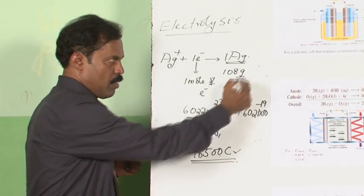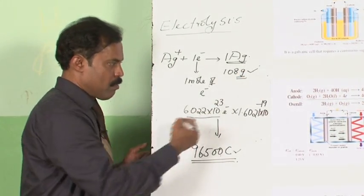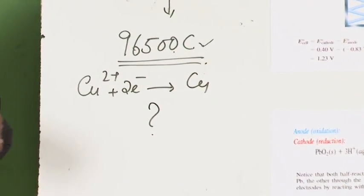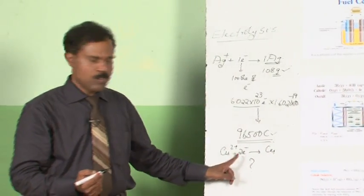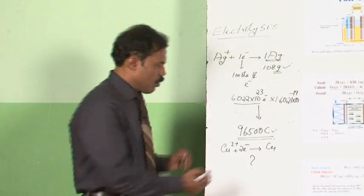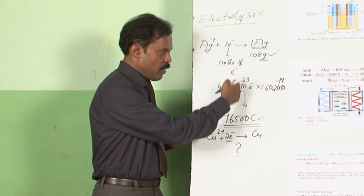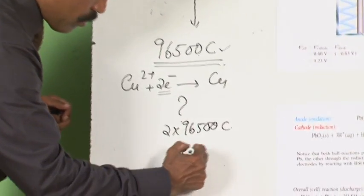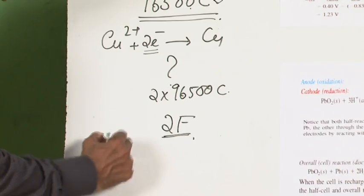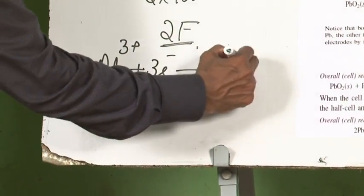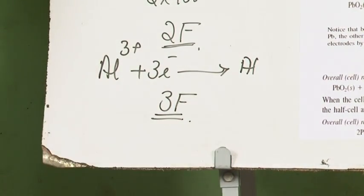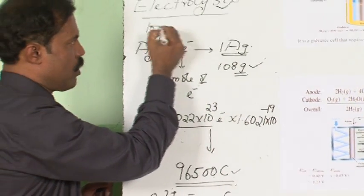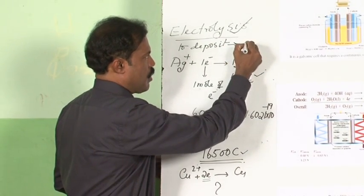If you pass 96,500 coulombs, that much silver will be deposited. For copper, Cu2+ accepts 2 electrons to form Cu, so 2 moles of electrons — that is 2×96,500 coulombs, or 2 Faradays — are required to deposit 1 mol of copper. By the same argument, aluminum requires 3 Faradays. Using this information, we can calculate the amount of electricity required to deposit any given amount of substance.